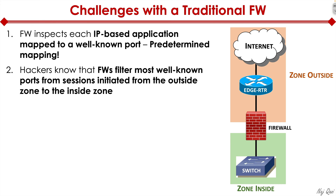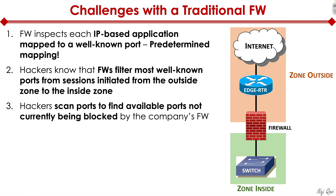Hackers know that firewalls filter most well-known ports from sessions initiated from the outside zone to the inside zone. They're smart enough to know that firewalls are really good at filtering well-known ports. So what hackers can do is scan ports to find available ports not currently being blocked by the company's firewall. There may be certain ports that are not blocked, and when hackers run a scan on the external interface of the firewall, they may uncover those open ports.